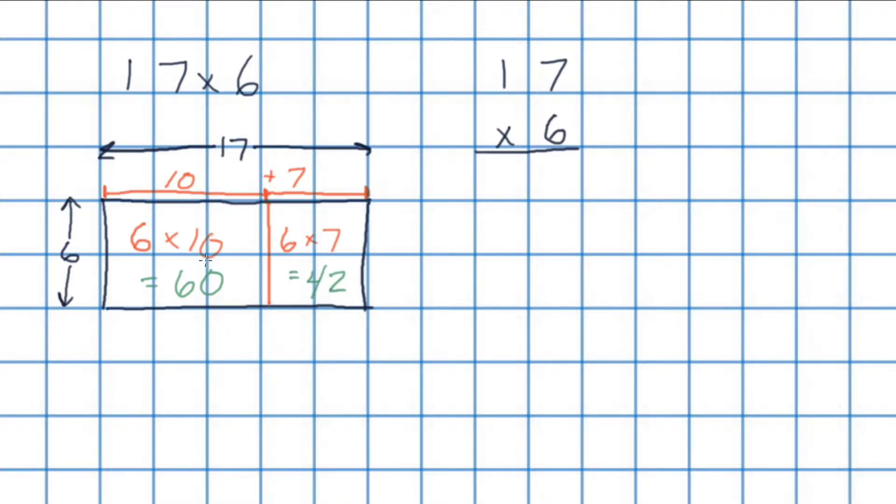All we need to do now is add our areas of these two smaller rectangles together, and that will give us the area of the larger rectangle. So we have 60 plus 42, and that's equal to 0 plus 2 is 2, and 6 plus 4 is 10. So we have an area of the larger rectangle of 102, which also means that our solution to 17 multiplied by 6 is 102.